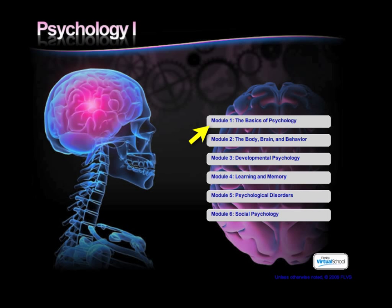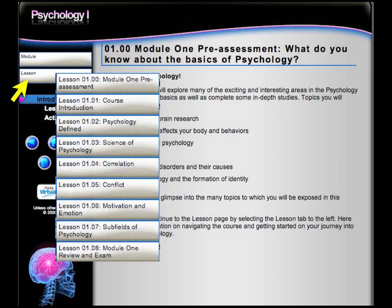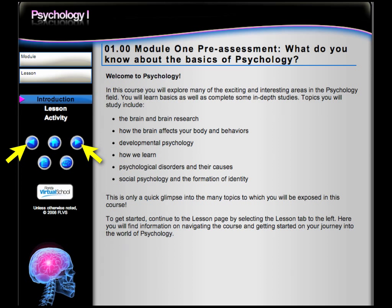You can access any of the modules from the course homepage or navigate to them within the lessons of a module. Once you click on a module from the homepage, you are taken to the first lesson of that module. Each module is divided up into eight lessons which present the content of the course. Each lesson is further divided into an introduction page, a lesson page, and an activity page. Use the left and right arrows to navigate through the interactives and articles until you reach the activity or assessment for the lesson.